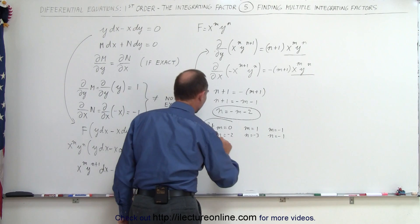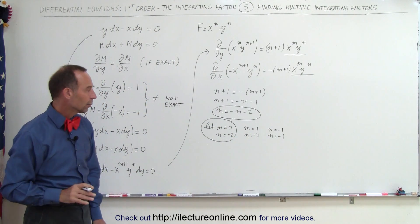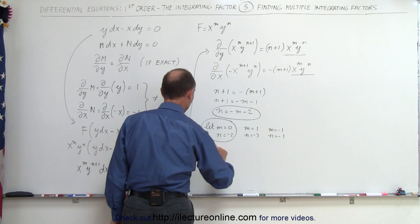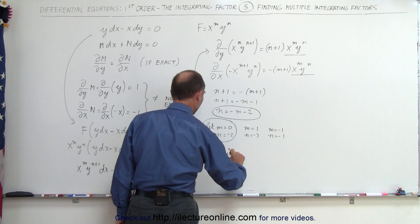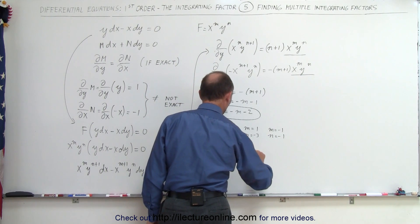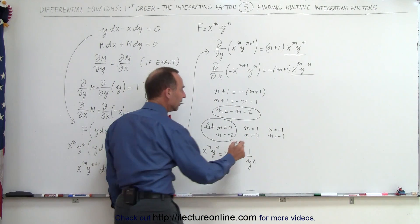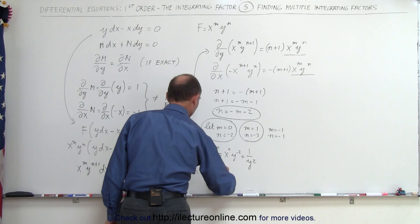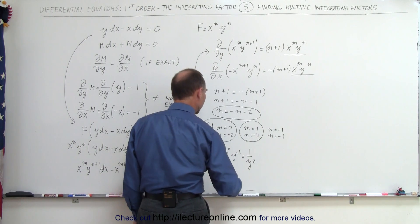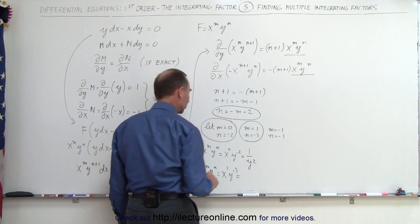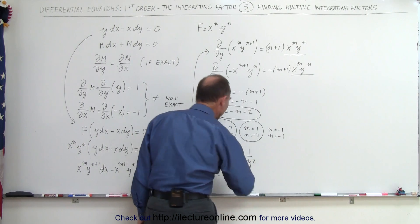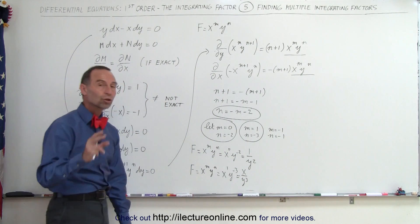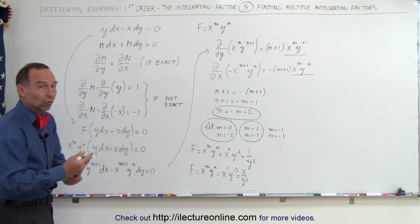Let's take the first example: let m equal 0 and n equal negative 2, which means our integrating factor f equals x to the 0 times y to the negative 2, which is 1 over y squared. For the second case, m equals 1 and n equals negative 3, giving an integrating factor of x over y cubed. Either one should work — multiplying both sides by 1 over y squared or by x over y cubed should yield an exact equation leading to the solution.